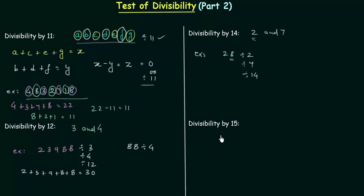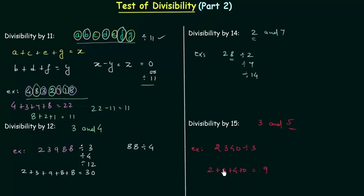Now we will move to divisibility by 15. A number is said to be divisible by 15 if it is divisible by both 3 and 5. For example, 2340: checking for 3, we add 2 plus 3 plus 4 plus 0 which equals 9, and 9 is divisible by 3. For divisibility by 5 we consider the units place, which is 0. Since the units digit must be 0 or 5, and we have 0, this number is divisible by 5. Hence it is divisible by 15 as well.